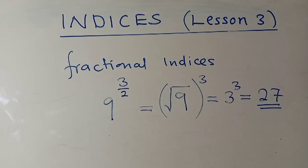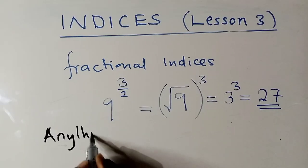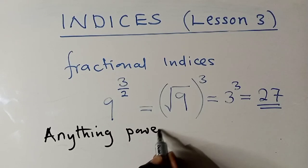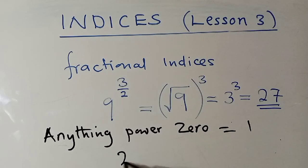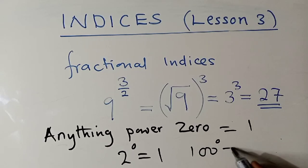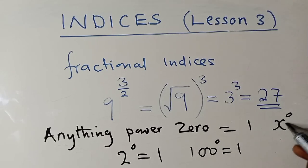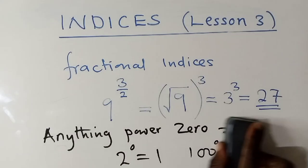Before I give you a challenge, I'd like you to understand this rule: anything to the power 0, the answer will always be 1. Even when you say 2 to the power 0, the answer is 1. You say 100 to the power 0, the answer is always 1. Or x to the power 0, the answer is always 1. Keep this in your head.